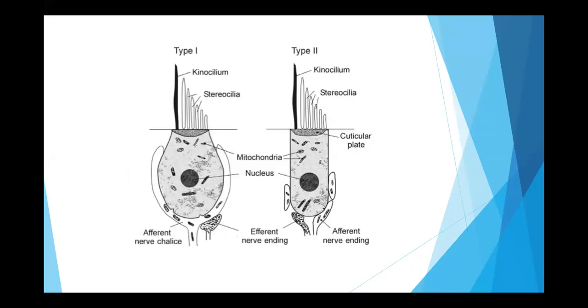Just like we have type 1 and type 2 hair cells in the cochlea, we have type 1 and type 2 hair cells in the vestibular system also. The only difference between the hearing hair cells and the vestibular hair cells is the presence of kinocilium.